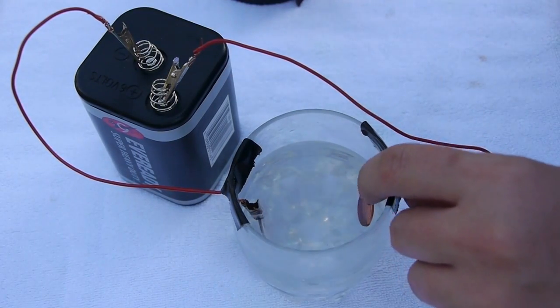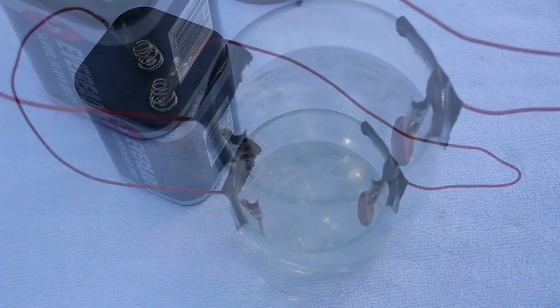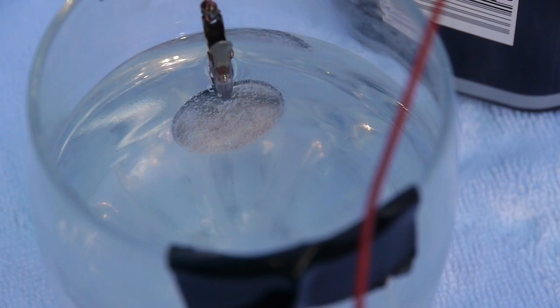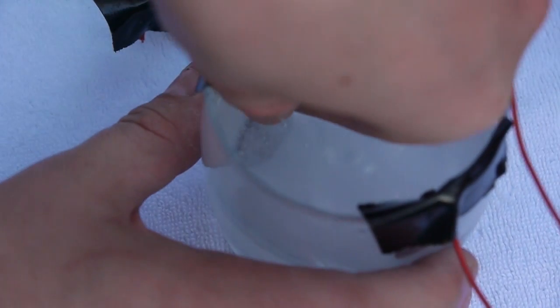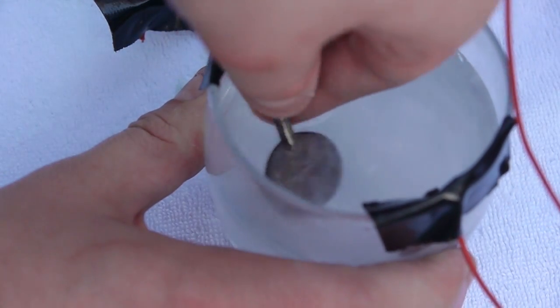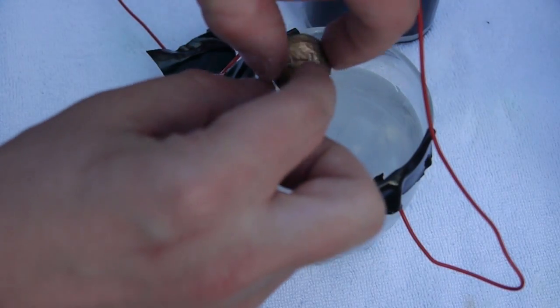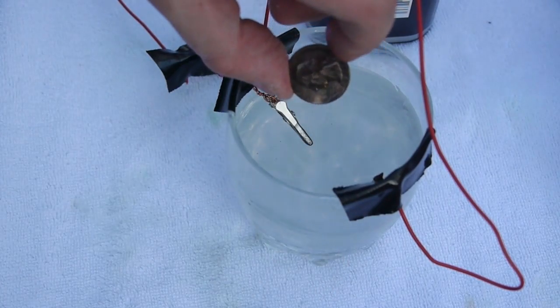Once you hook up the positive and negative ends to your coins, you're going to notice that bubbles will form on the negative end. This is actually hydrogen gas being generated. Now what we're essentially doing is dissolving the copper into the solution and then transferring it over to the quarter. Now vinegar is really not that strong of an acid, so it's going to take a while to dissolve the copper in there. That's why we use electricity to help the process along a little bit.